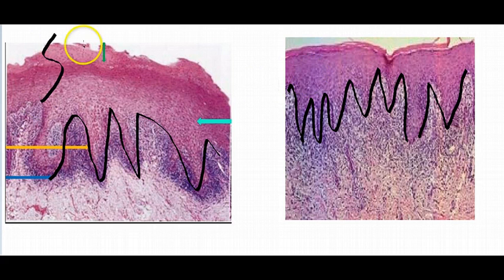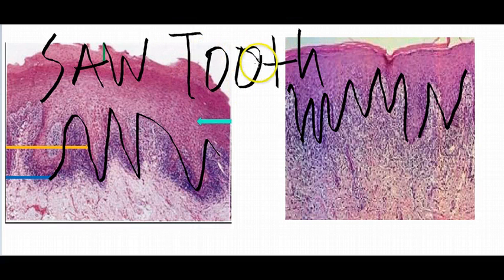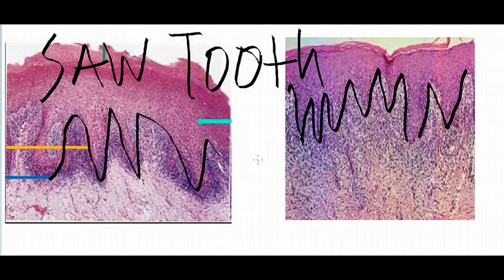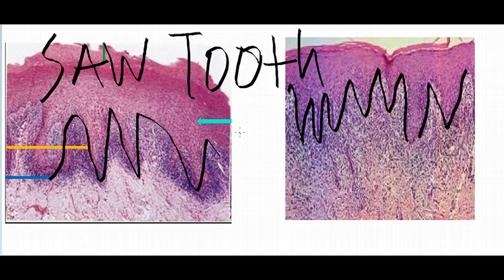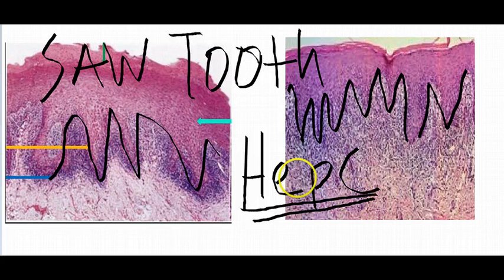Remember this: saw-tooth appearance at the dermal-epidermal junction. One last thing — there's not really a known cause. They say it's autoimmune, but no specific antibodies have been identified. However, if you suspect lichen planus — for example, you find Wickham's striae on oral examination — please do a test for Hepatitis C. There's a strong association of lichen planus with Hep C.